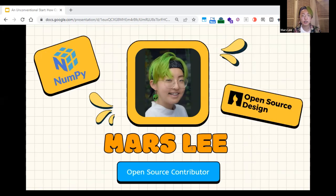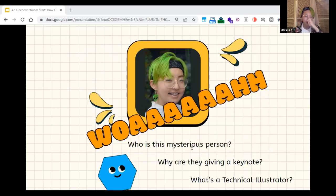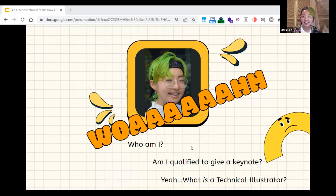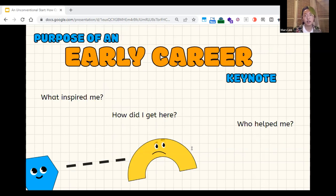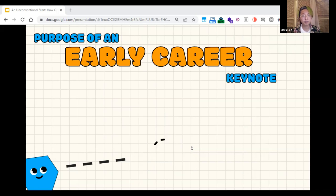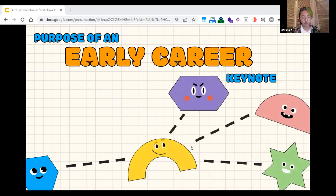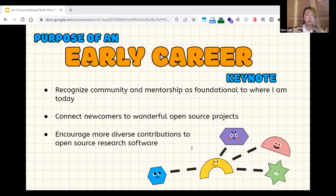I contribute to two open source projects, NumPy and open source design. And so at this point, you're probably thinking, who is this mysterious person? Why are they giving a keynote? What's a technical illustrator? And to be honest, I am thinking the exact same things. Who am I? Am I qualified to give a keynote? And what is a technical illustrator? When I was asked to give this keynote, I made some assumptions of what I would have to do: to be inspirational, explain how I got here, and give advice. And I asked myself then what inspired me? How did I get here? And who helped me? And so once I started thinking beyond myself, I saw the connections much more clearly. For me, the purpose of this keynote is three things: to recognize community open source specifically, connect newcomers to projects, and encourage more diverse contributions to open source research software.